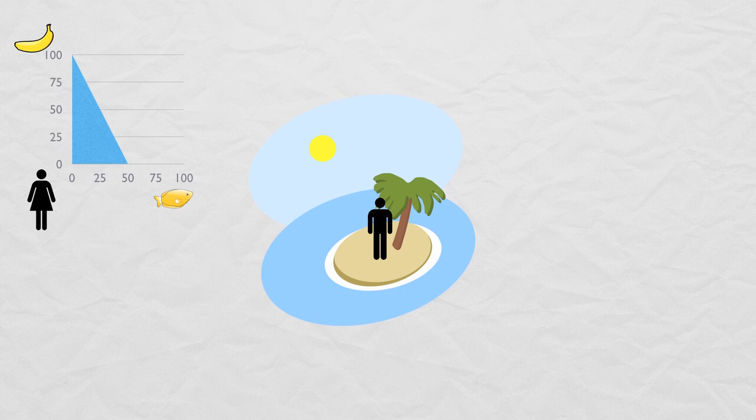The first person, let's call her Jane, can pick a hundred bananas if she spends a hundred percent of her week picking bananas or she can catch fifty fish if she spends a hundred percent of her week fishing. She can also choose to spend part of her time catching fish and part of her time picking bananas. If we graph all the possible combinations of bananas and fish she could get, we get her feasible set.